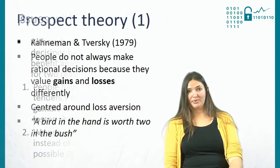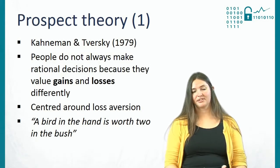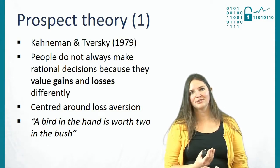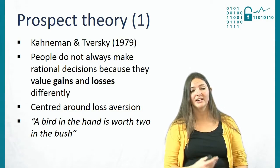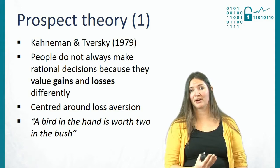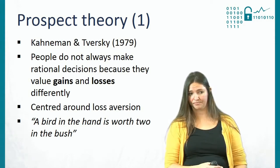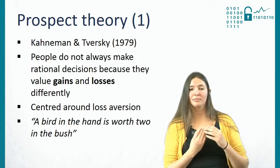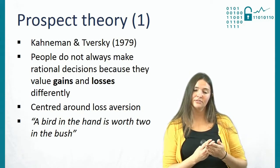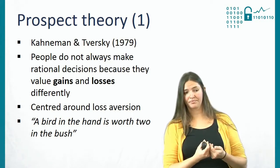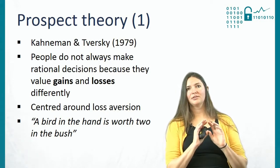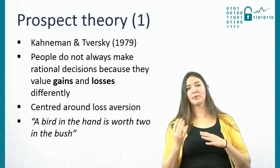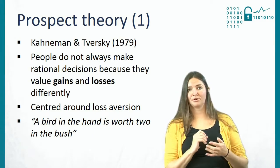Kahneman and Tversky came up with prospect theory in 1979, and Kahneman actually received the Nobel Prize for this work in 2002. The main idea behind prospect theory is that people don't always make rational decisions because they value gains and losses differently. This centers around one theme called loss aversion — we like winning, but we don't like losing, and that changes our behavior. As the saying goes, one bird in the hand is worth two in the bush.